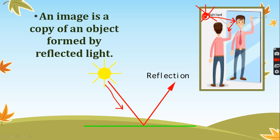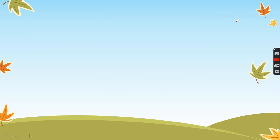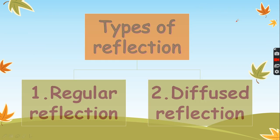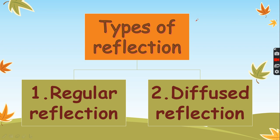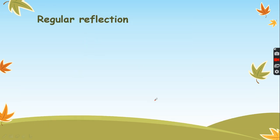Now we have learned what is the meaning of reflection of light. Reflection of light has two types. The first type is regular reflection, and the second type is diffused reflection. Let us learn the meaning of regular reflection first.